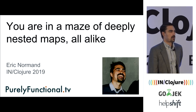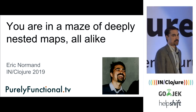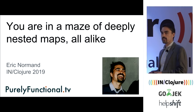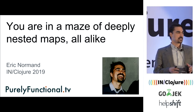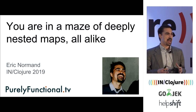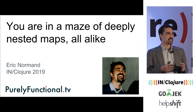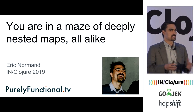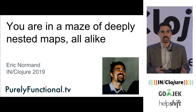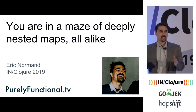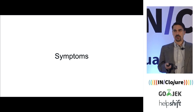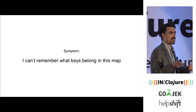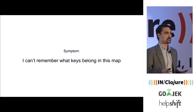I want to talk about a problem that I hear a lot of people complain about in the Clojure world. It has a lot to do with using data. We get these really deeply nested maps. We forget what keys we have and what entity we're supposed to use in certain places — what's supposed to be in this map. A very common complaint is: I can't remember what keys I'm supposed to use in this map.